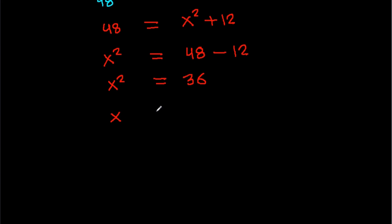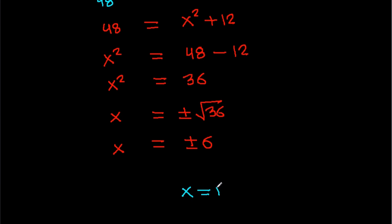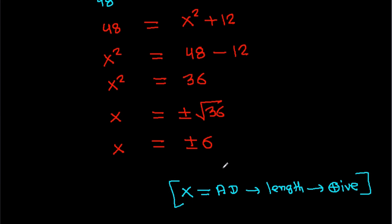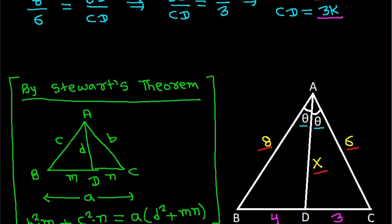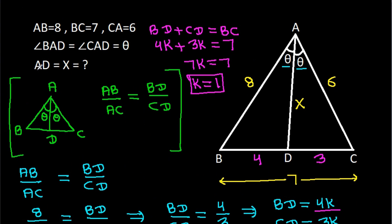So X equals plus or minus the square root of 36, giving X equals plus or minus 6. Since X is AD, which is a length, it must be positive. Therefore X equals 6, so AD equals 6.